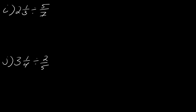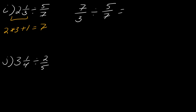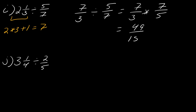For the next one, I've got a mixed number again. I take two times three plus one, which equals seven. So I can rewrite this as seven over three divided by five over seven, which becomes seven over three times seven over five. That gives 49 over 15 — and we can just leave it like that.